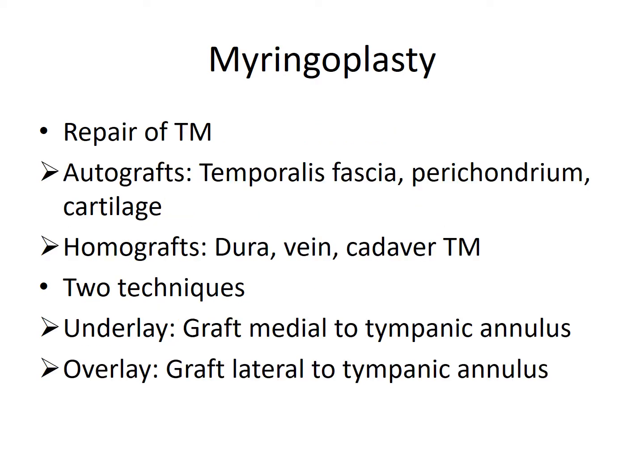Myringoplasty is one of the very common ear surgeries performed everywhere. By definition, Myringoplasty means repair of the Tympanic Membrane — closure of the perforation done by using a Graft Material. Graft Materials can be either Autografts or Homografts. Autografts mean the graft is harvested from the same patient. Examples of Autografts can be Temporalis Fascia, Perichondrium, Cartilage, and sometimes Fat or Facial Vein. But the most common Autograft used is Temporalis Fascia.